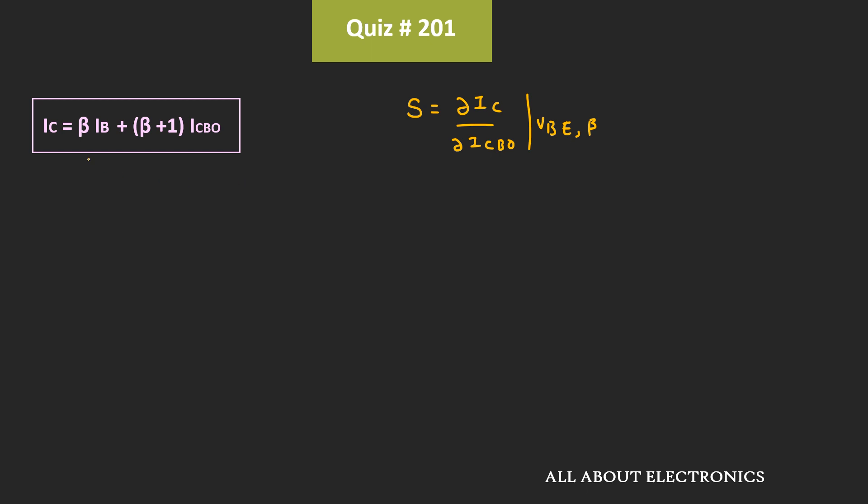And we also know that for the bipolar junction transistor, the collector current Ic can be given by this expression.